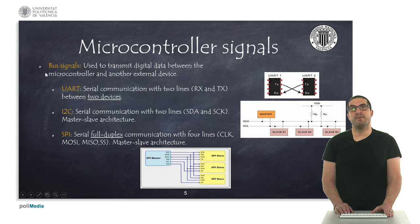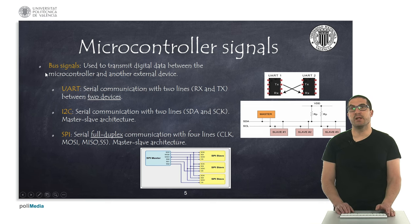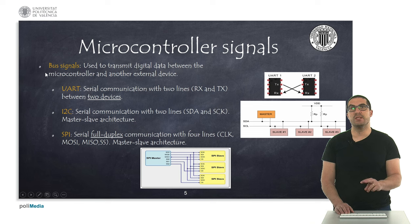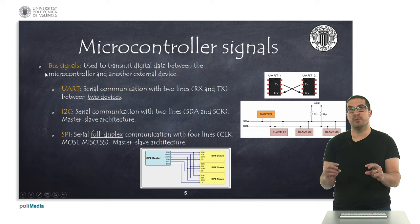We also have different kinds of bus signals. Bus signals are specialized digital signals used to transmit data between a microcontroller and any kind of external device. Among the most commonly known bus signals, we have UART — a serial communication that uses two lines, one for reception and one for transmitting, and it is basically used for communication between two devices.